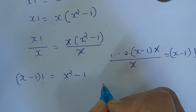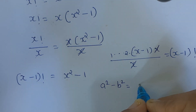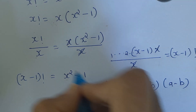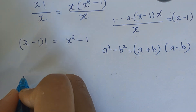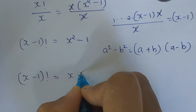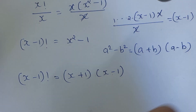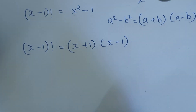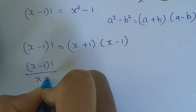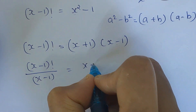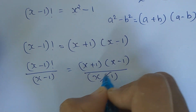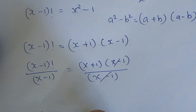What is x² - 1? Using the difference of squares formula, a² - b² = (a+b)(a-b), we get x² - 1 = (x+1)(x-1). So (x-1)! = (x+1)(x-1). Now divide both sides by (x-1): (x-1)! divided by (x-1) equals (x+1)(x-1) divided by (x-1).